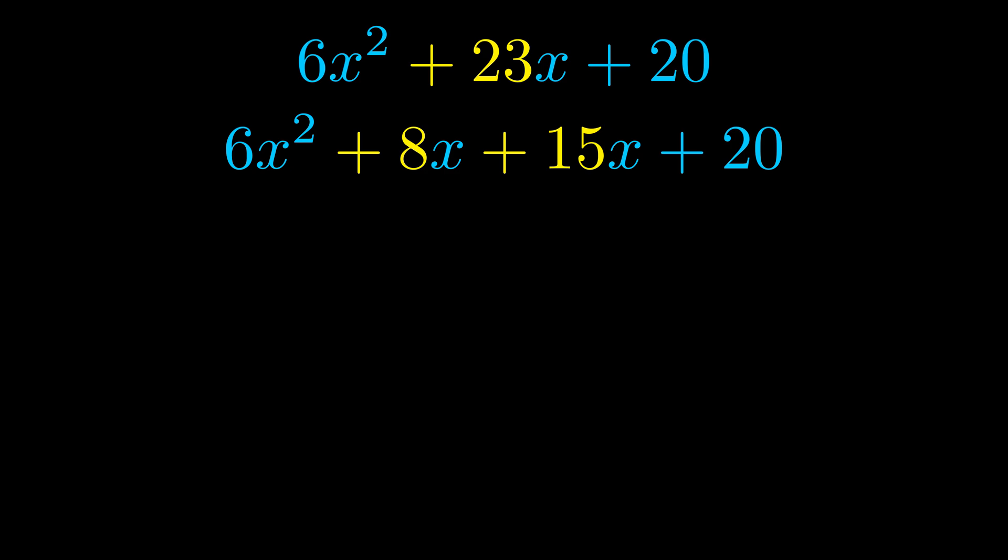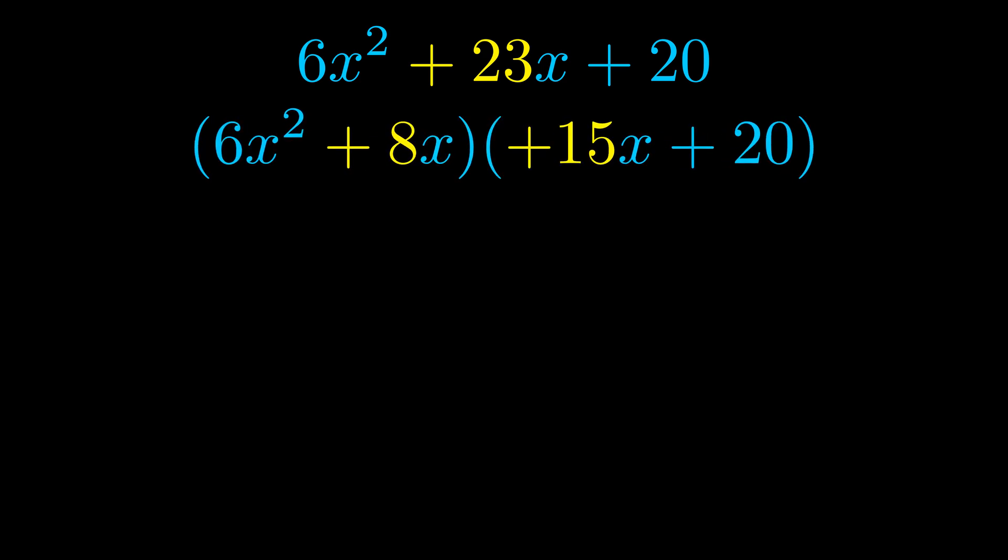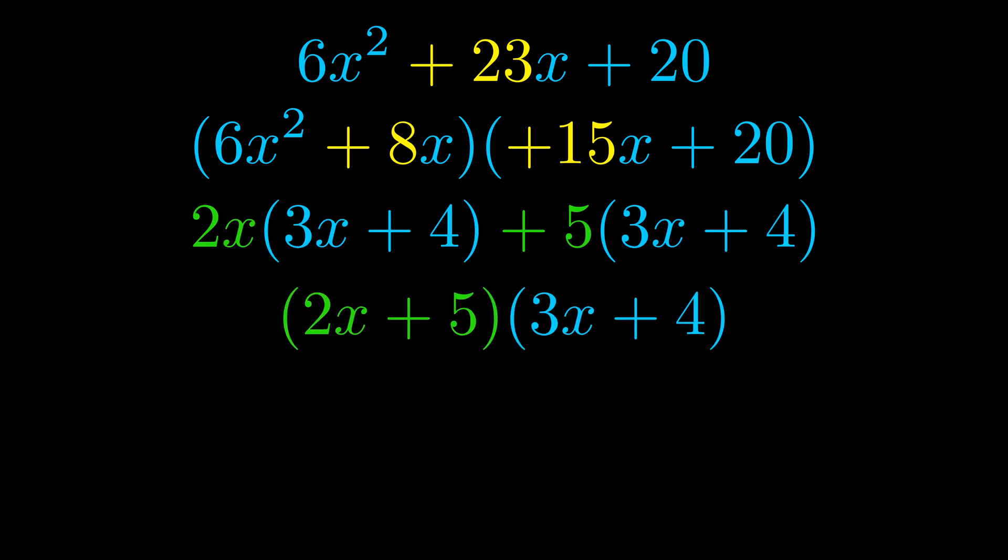Once we've done this we go ahead and we put parentheses around the first term and the last term. And we do that so that we can take the greatest common factor out of both terms. We can see the greatest common factor is now outside in green. Notice also how what remains inside of the parentheses is the same in both cases. The blue values are the same.